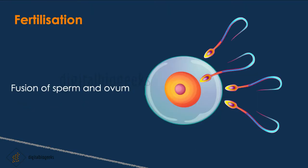Moving on to fertilization — the fusion of sperm and ovum is called fertilization. Millions of sperms are produced, but only one sperm fuses with the egg. The nucleus of the sperm fuses with the nucleus of the egg, and a single nucleus is formed, producing the zygote. We will discuss the development of the embryo in the later slides.